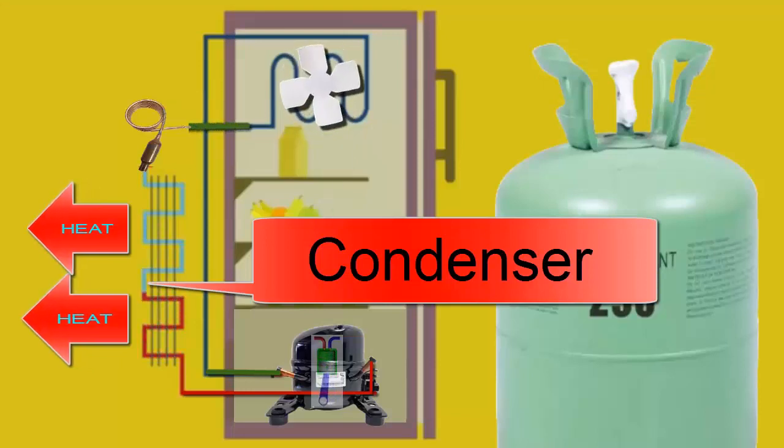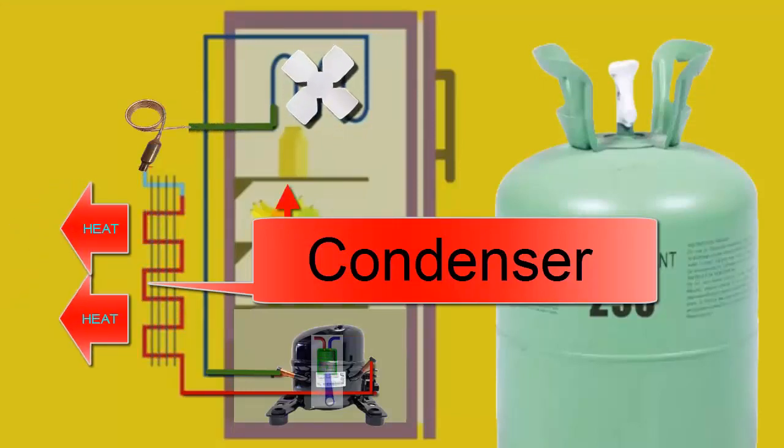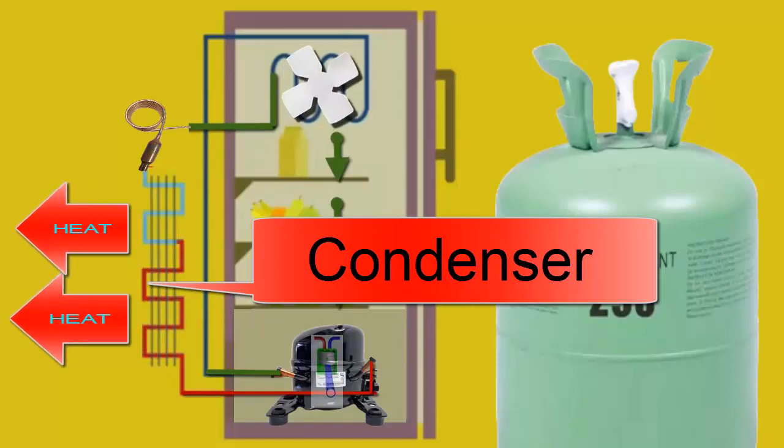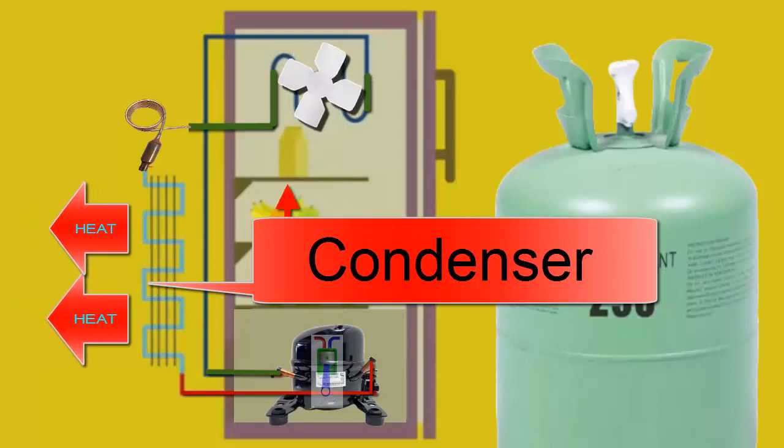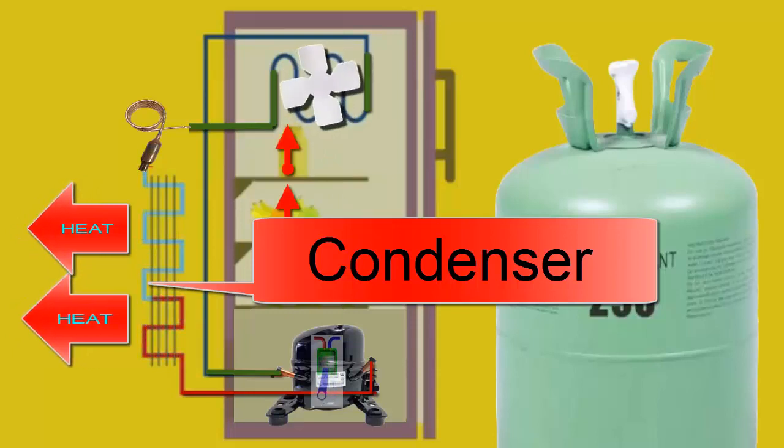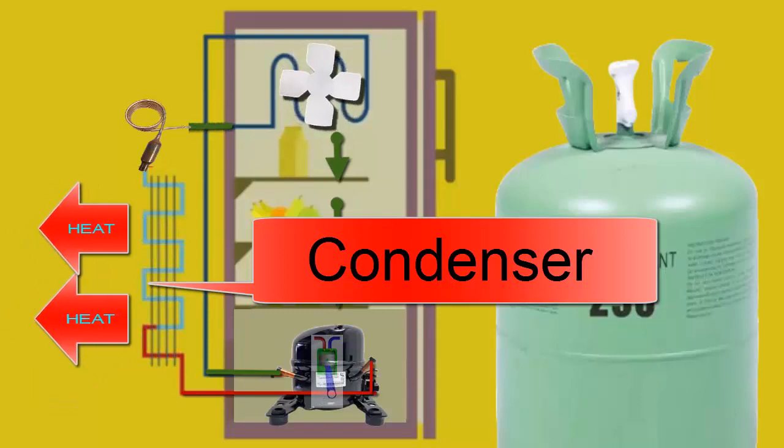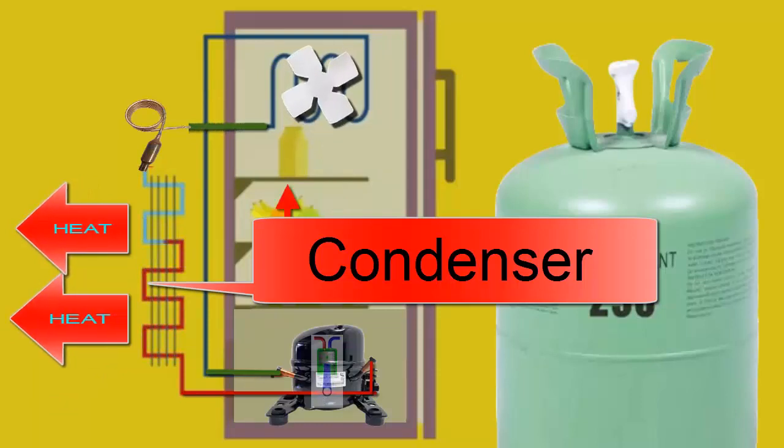In the condenser, the refrigerant must lose the absorbed heat from the products inside the equipment and the energy absorbed in the compressor. This heat must be expelled into the environment in the condenser. This heat dissipation process is favored by the high pressure that the R290 refrigerant gained in the compressor.